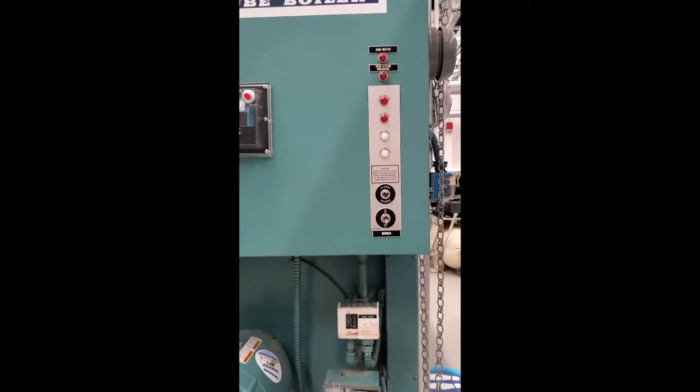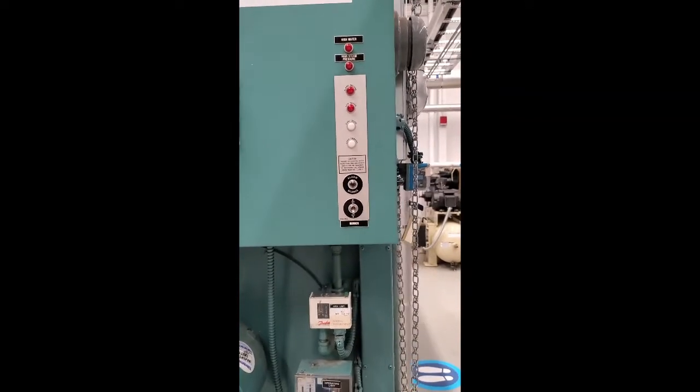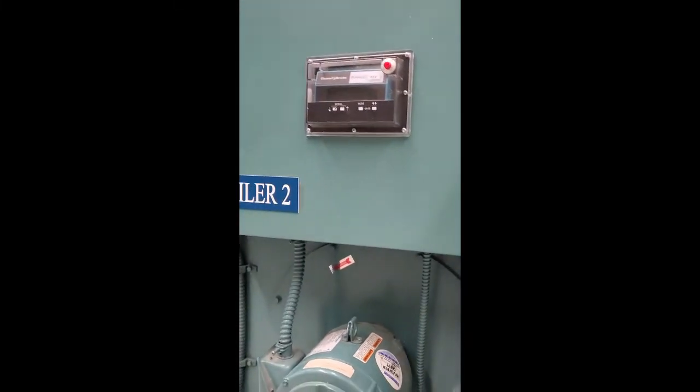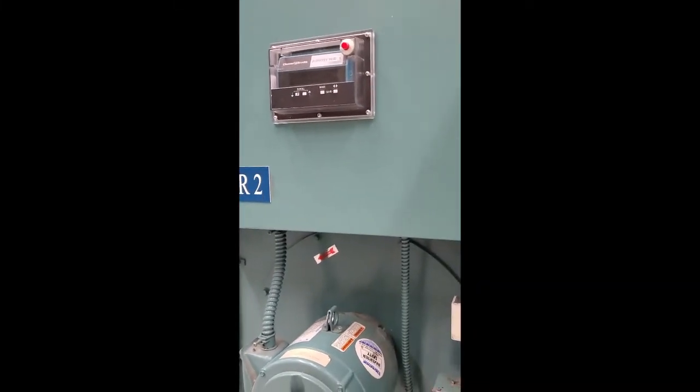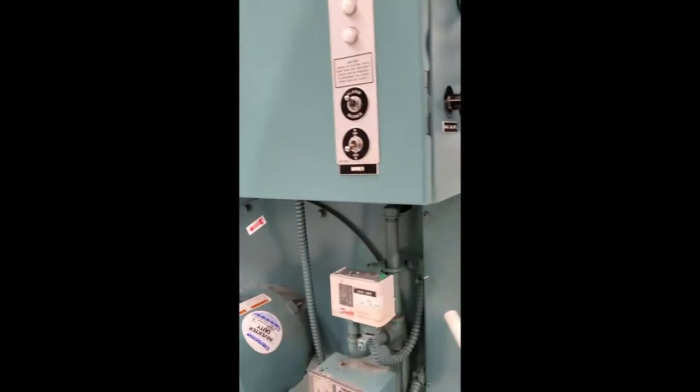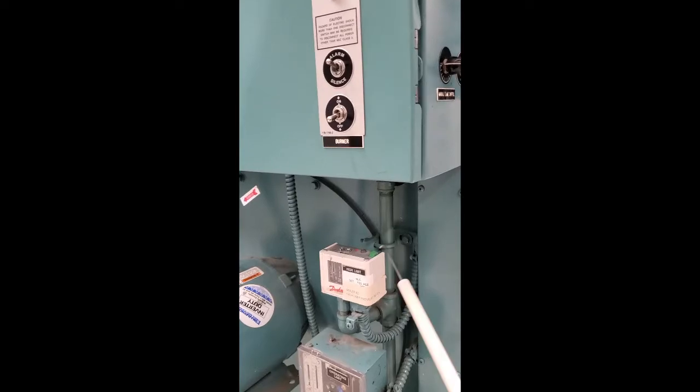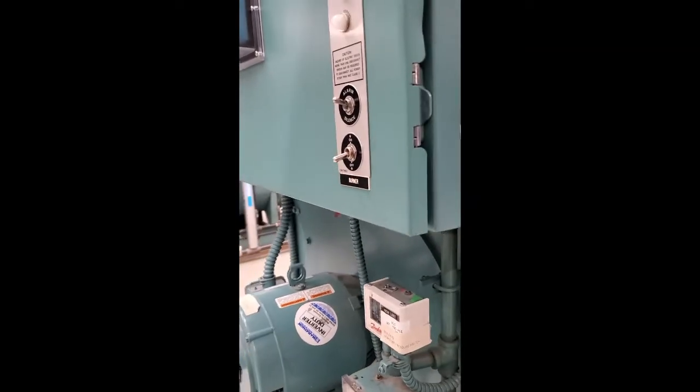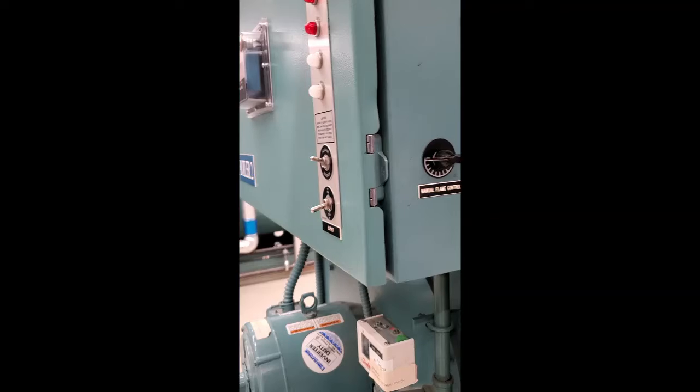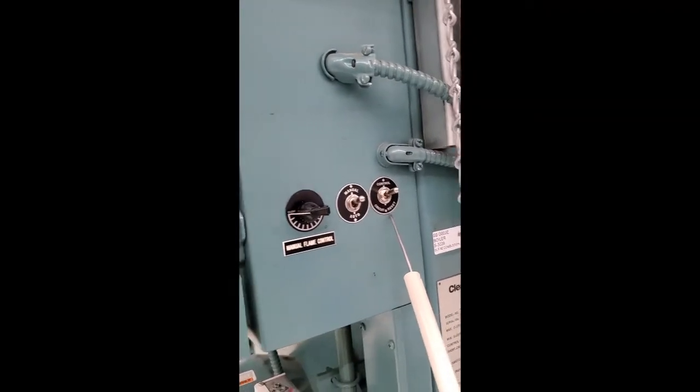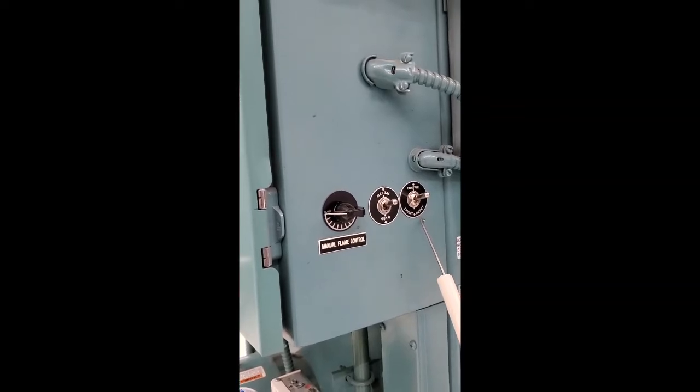On the programmer itself, you have a reset right there. On the high limit pressure cutout, there's a reset there. And on the control circuit here, you have to enter the reset. Any one of these, if they are not reset, then you cannot start the boiler.